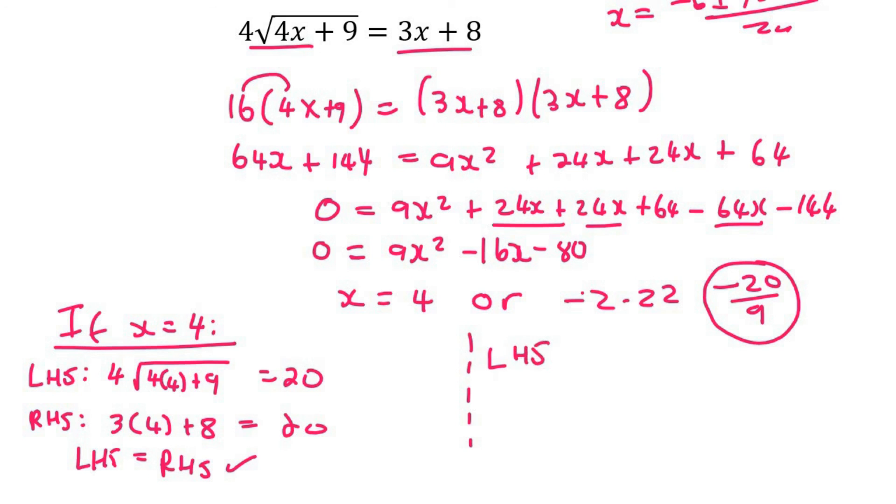So for the left hand side, I'm going to go plug it in as 4. 4 multiplied negative 20 over 9 plus 9 and that gives me 4 thirds or 4 over 3. Now for the right hand side, you use the same value. So this is 3 times negative 20 over 9 plus 8 and that's also 4 over 3.